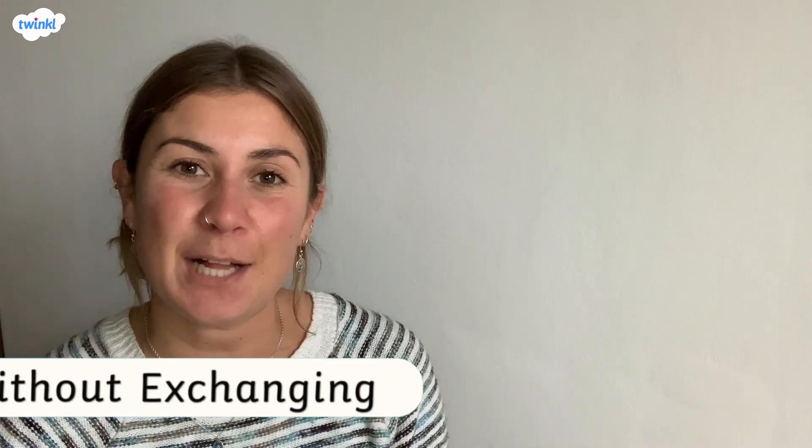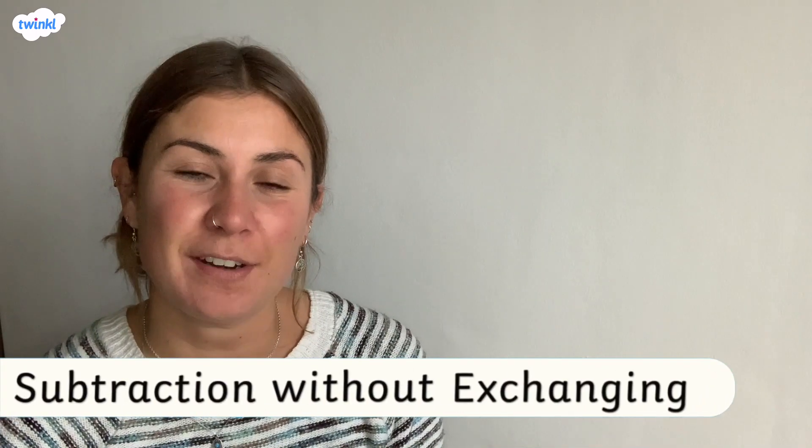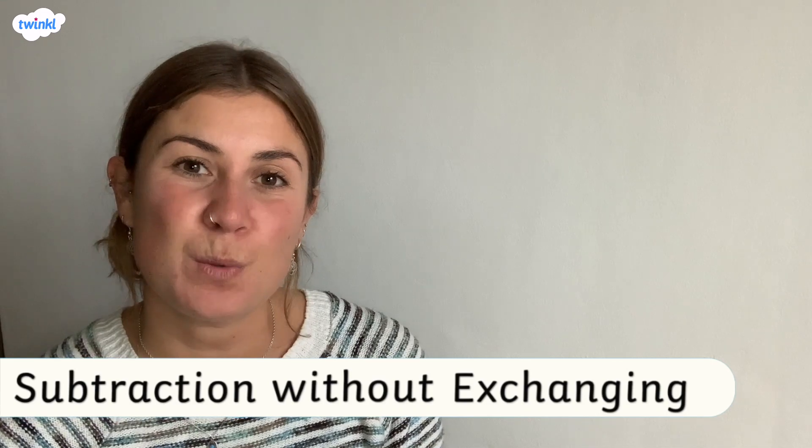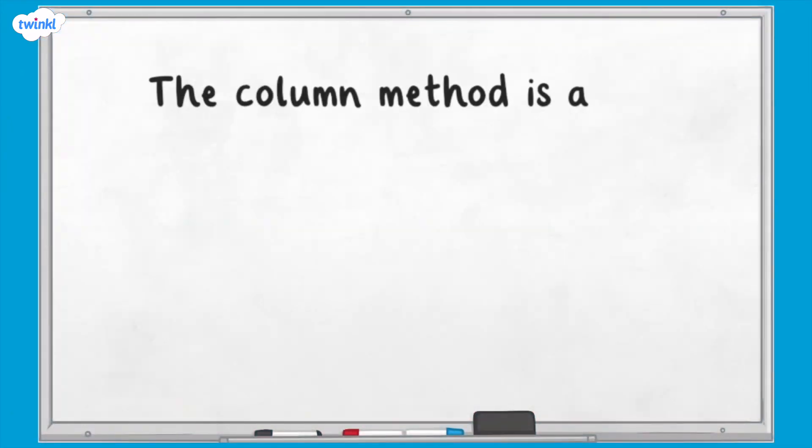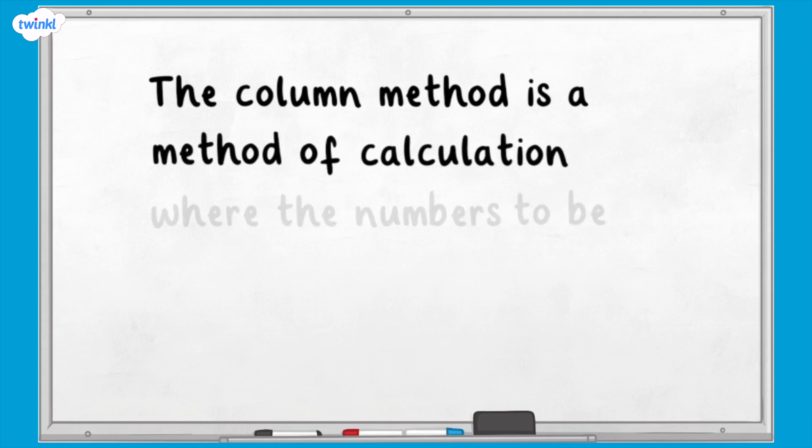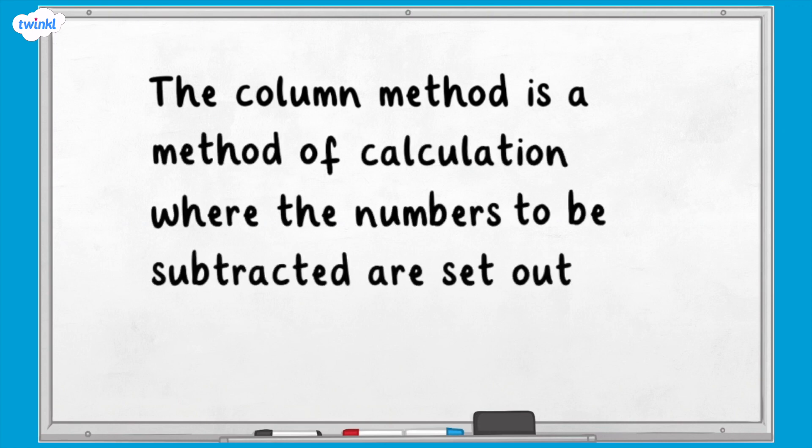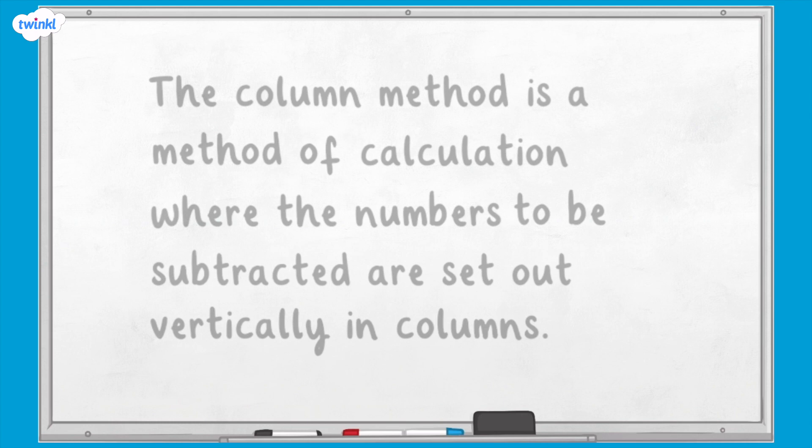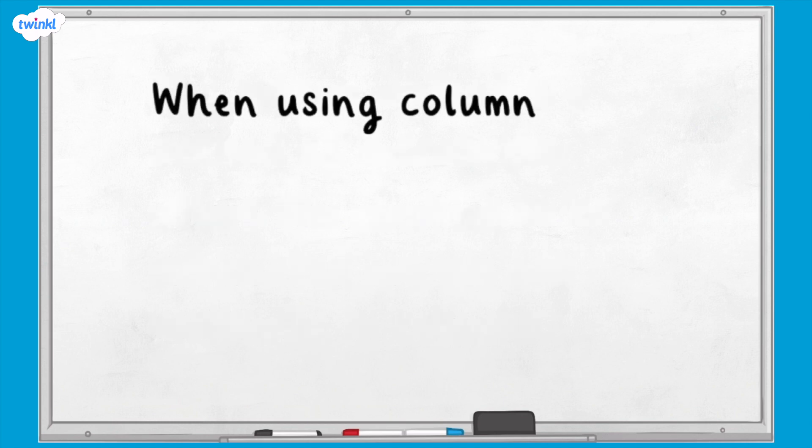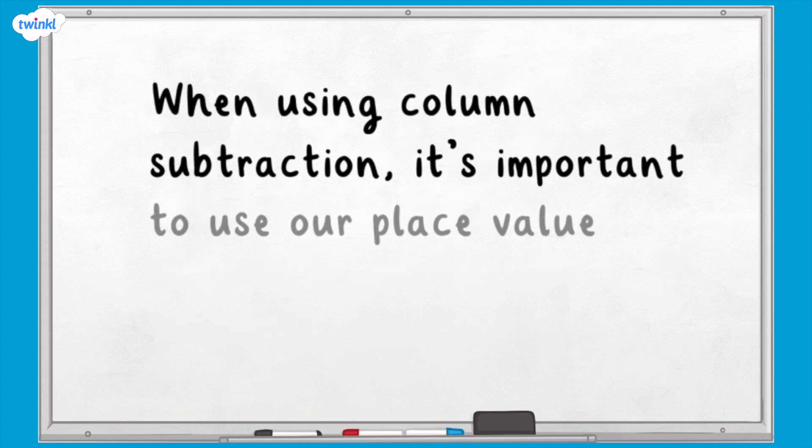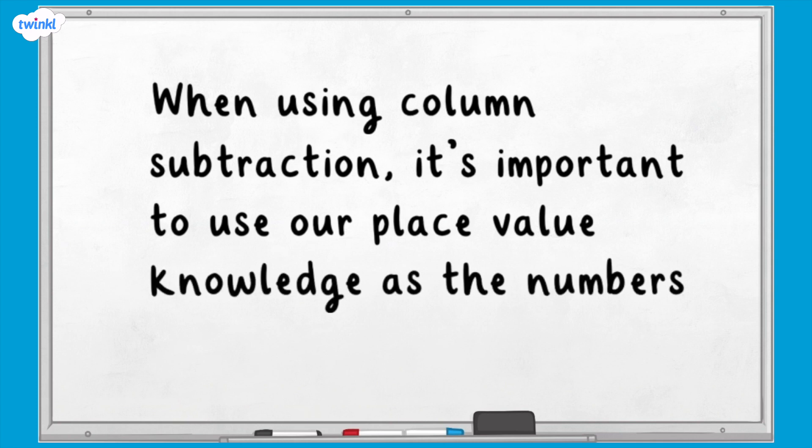Hi, this video is here to help you with using column subtraction for five and six digit numbers without exchanging. The column method is a method of calculation where the numbers to be subtracted are set out vertically in columns. When using column subtraction it's important to use our place value knowledge as the numbers must be correctly lined up.